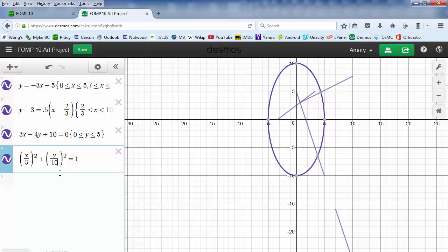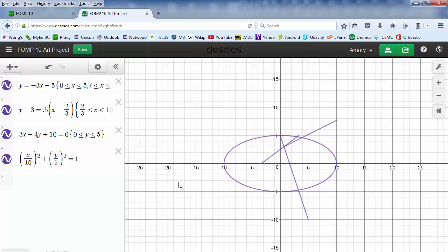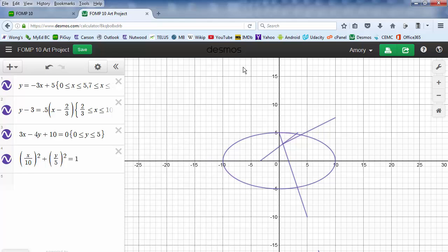If I wanted to make the x wider, then I would just change the radius for the x to be bigger. Now, how do we move it? To navigate, I'm just clicking and dragging on the graph.